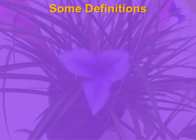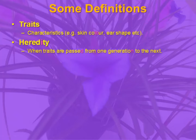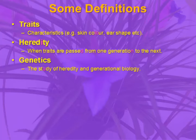So, let's look at some definitions. First of all, what are traits? They are characteristics — things that can make creatures different from each other or from members of different species. Skin colour, ear shape, number of legs — these are traits passed down genetically, as well as less solid things like sense of smell or eyesight. Heredity is when traits are passed from one generation to the next — we can describe traits as hereditary, but the process is called heredity. And genetics is the overall study of heredity and generational biology and the underlying chemistry of that.